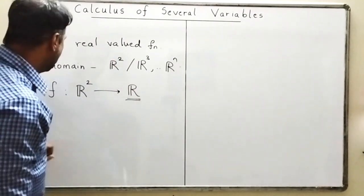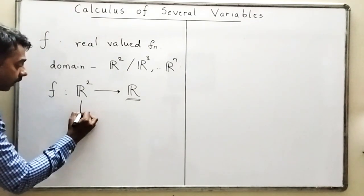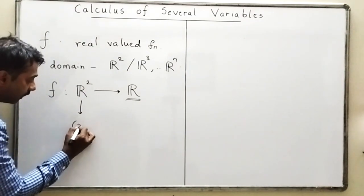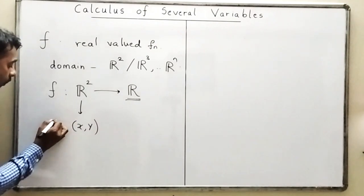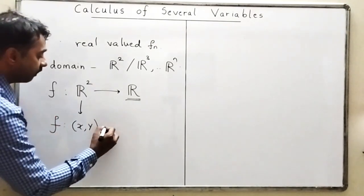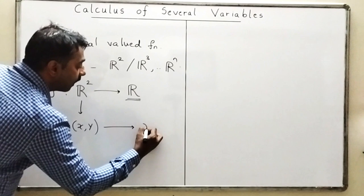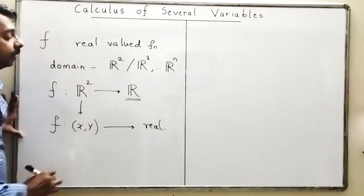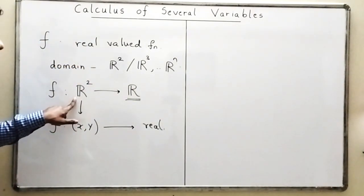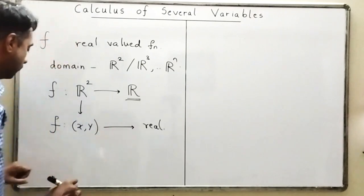Now we know that elements of R² are pairs (x, y). So I'm going to apply the function on the pair (x, y) and in return I will get a real number. This is a function with domain R² which is a real valued function.